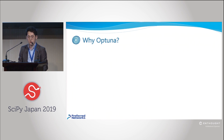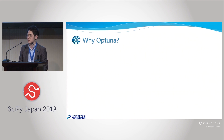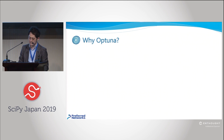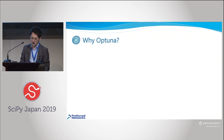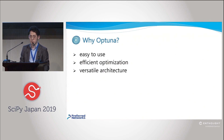If you are already familiar with hyperparameter optimization, you may know some other existing libraries like Hyperopt, SMAC, or Google Vizier. So why should you use OpTuna among those libraries? Because OpTuna is intuitive, efficient, and versatile. Let me describe those criteria.